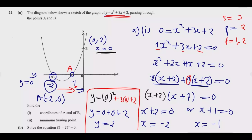The minimum turning point is the lowest point of the curve. There are two ways to find it: you can use the formula, or you can use differentiation in case you forget the formula. Either way, you first find the x-value at the turning point, then substitute back into the equation to find the y-value.